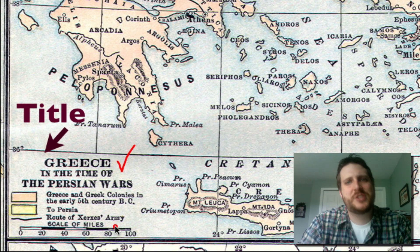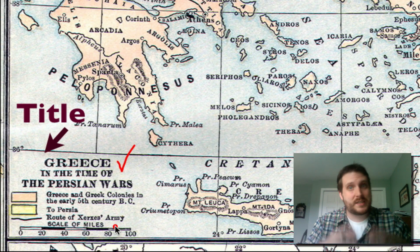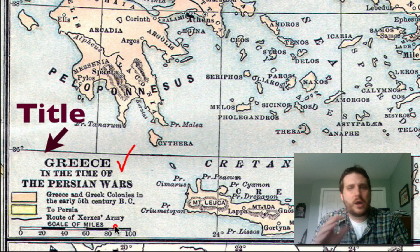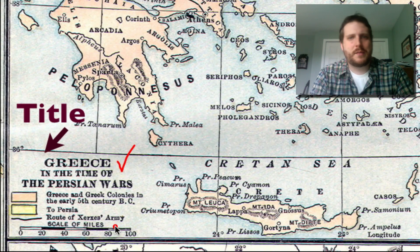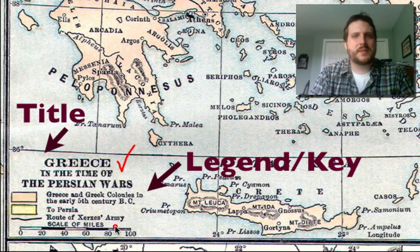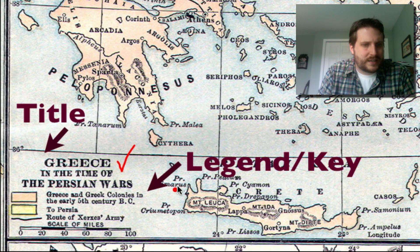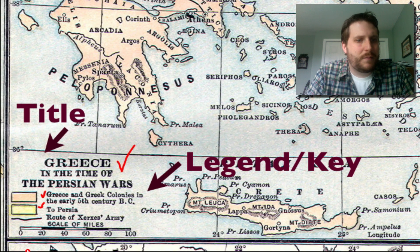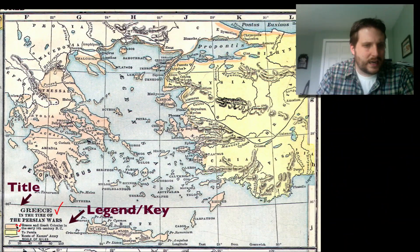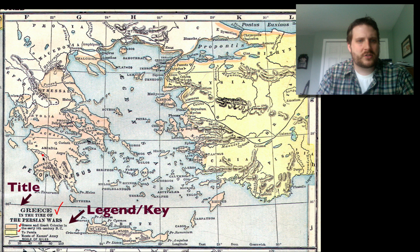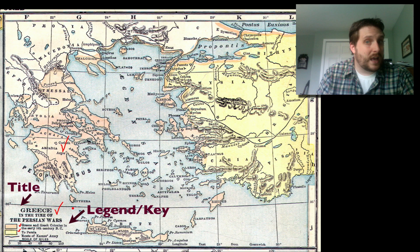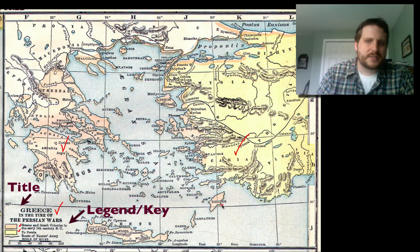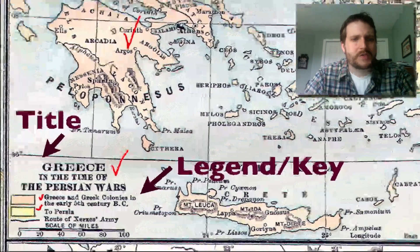The next part of the map is the legend, sometimes called the key. It tells you what the different colors and symbols on a map mean. Here, the orangish areas are Greek areas, so I know this area is Greece. The yellow areas — according to the legend — represent Persia, so that yellow area over here is the Persian Empire.